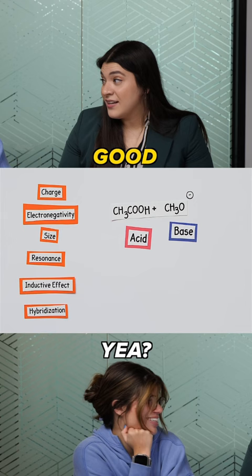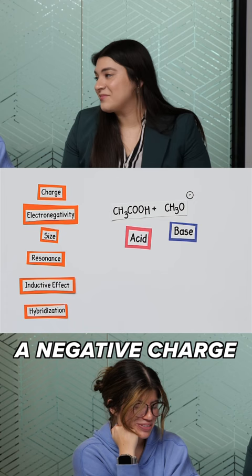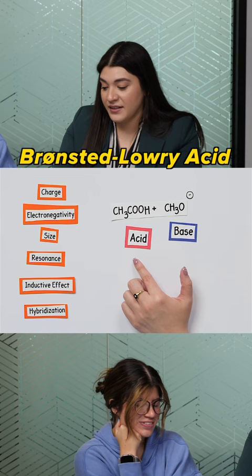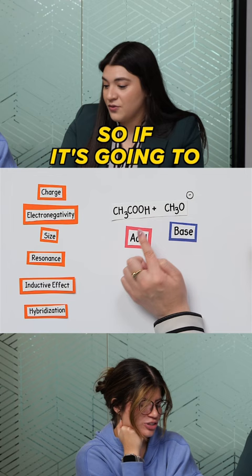This is a negative charge. Perfect. And this goes back to basically what an acid is, specifically the Bronsted-Lowry acid. We know that this is going to donate a proton, so it has to have a proton — H+, hydrogen. So it has to have a hydrogen to give.